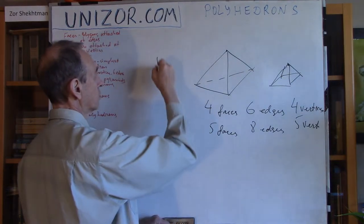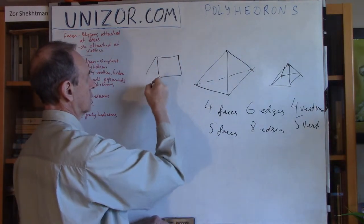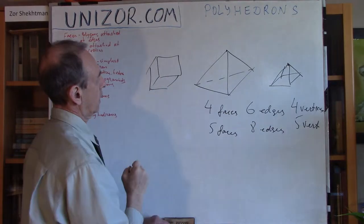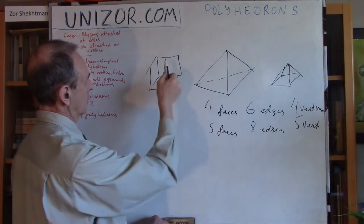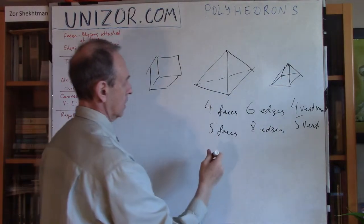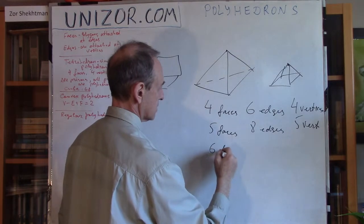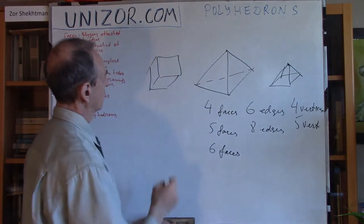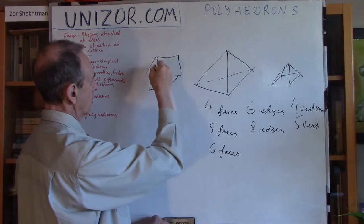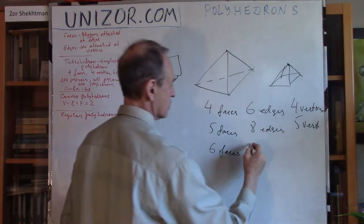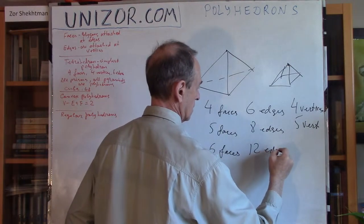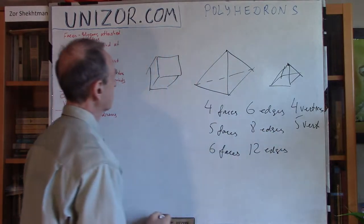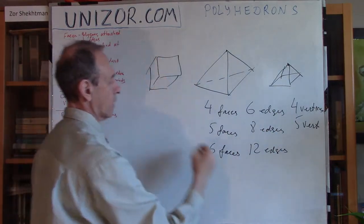Something like a cube has one, two, two, and four, it has six faces. Edges four, and four, and four, twelve edges, and how many vertices? Four and four, eight vertices.